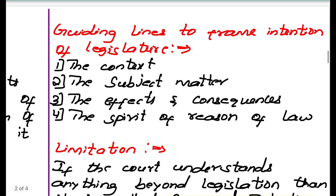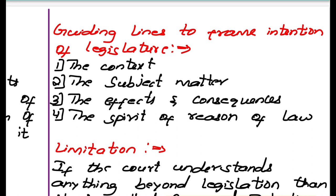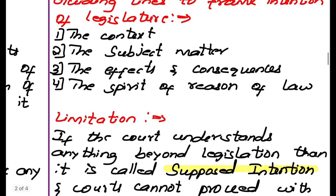Guiding lines to frame the intention of legislature: first, the context has to be seen; then the subject matter of the legislature; then the effects and consequences of the interpretation; and then the spirit and reason of the law. These are the guiding lines to frame the intention of legislature.